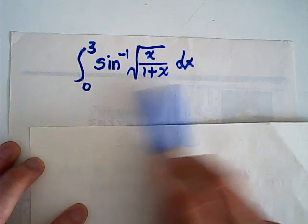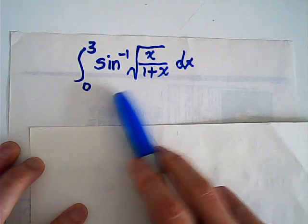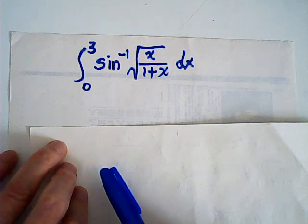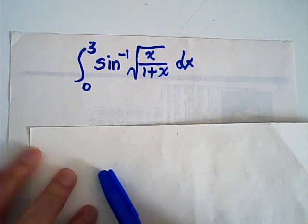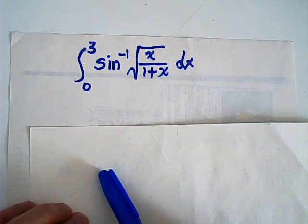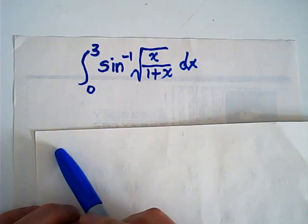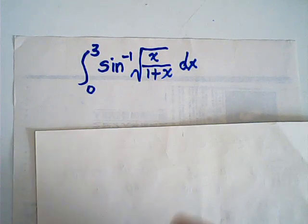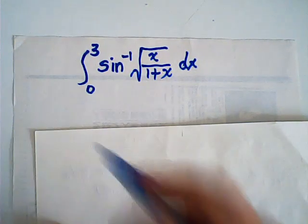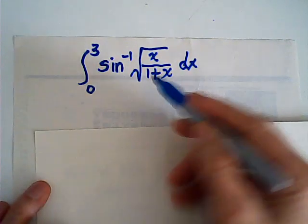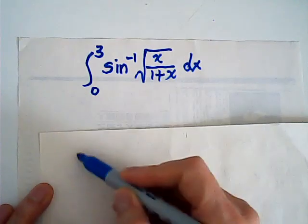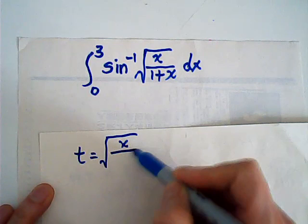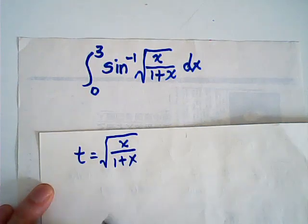We have an integral. While this looks not easy, what do you have in your mind for substitution? How about this — we get rid of the square root. Let t be this square root x over 1 minus x.